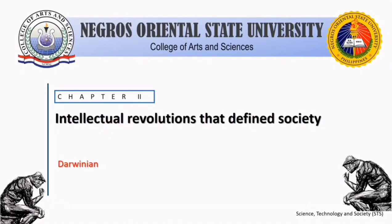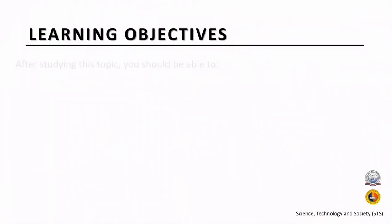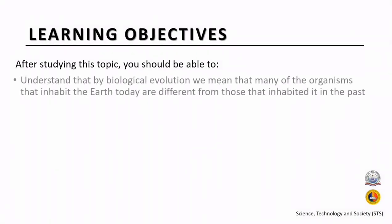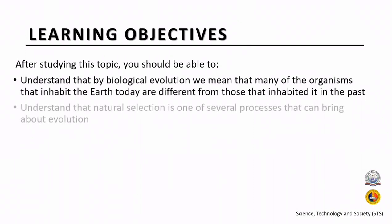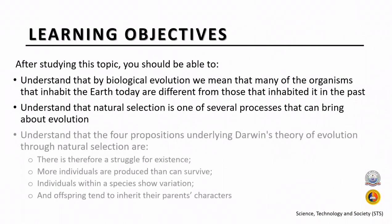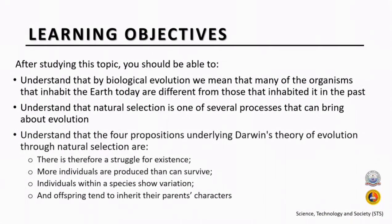Chapter 2: Intellectual Revolutions That Define Society. Darwinian Learning Objectives. After studying this topic, you should be able to understand that by biological evolution, we mean that many of the organisms that inhabit the earth today are different from those that existed in the past. Understand that natural selection is one of several processes that can bring about evolution.